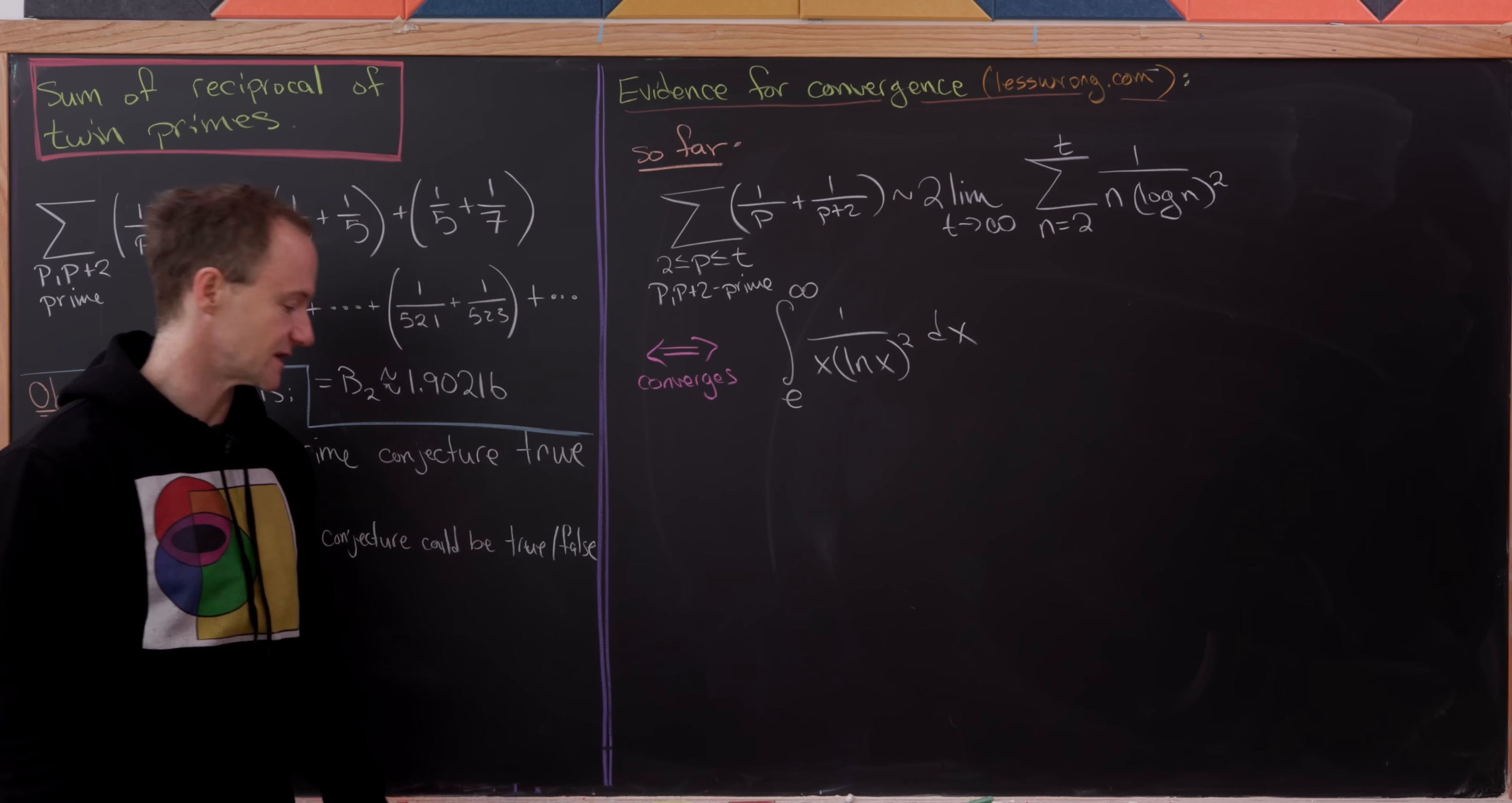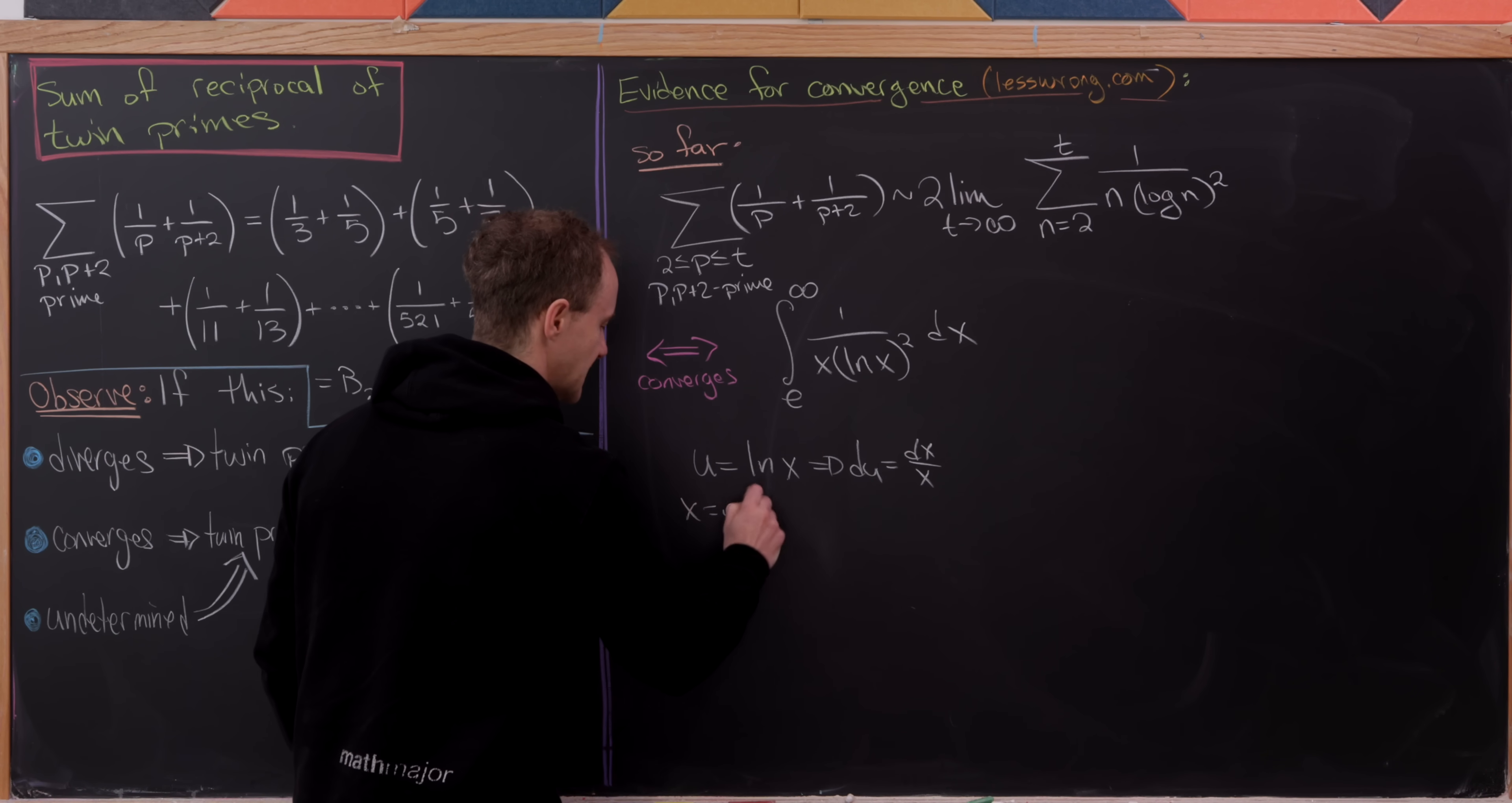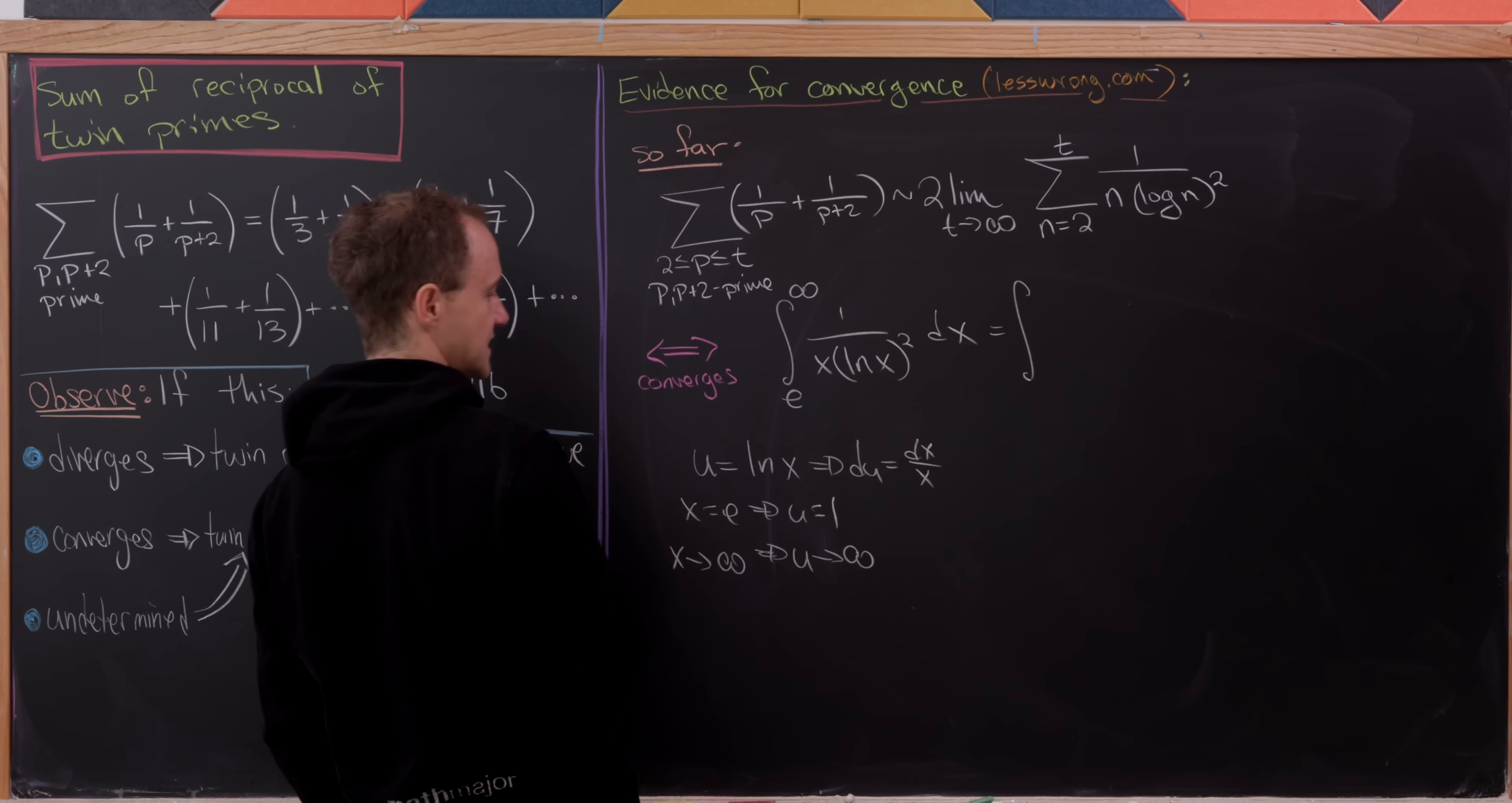Well yes, we can pretty easily. So we'll do a u substitution first. So let's let u equal the natural log of x. Observe that that makes du equal to dx over x. Then when x is equal to e, that means that u is equal to 1. And then as x approaches infinity, that has u also approaching infinity.